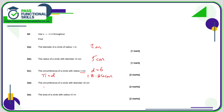For D, again the circumference — that's pi times the diameter. Luckily they've given us the diameter, so that's 3.14 multiplied by 28, which comes to 87.92 centimetres.